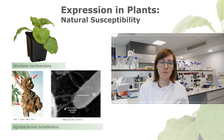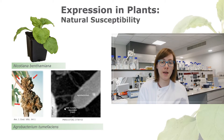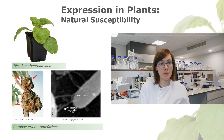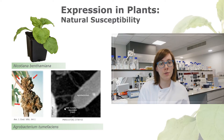Agrobacterium is commonly found in nature and causes diseases like plant galls and tumours on the plants it infects. It works by taking advantage of wounds on plant tissue and infects the tissue at the site of damage. The bacterium is capable of passing genetic information contained on a plasmid into the plant cells exposed at these damaged areas, forcing the plant to make what it requires for its life cycle.